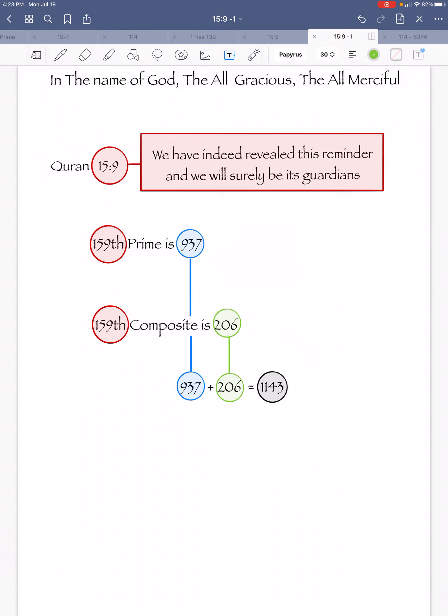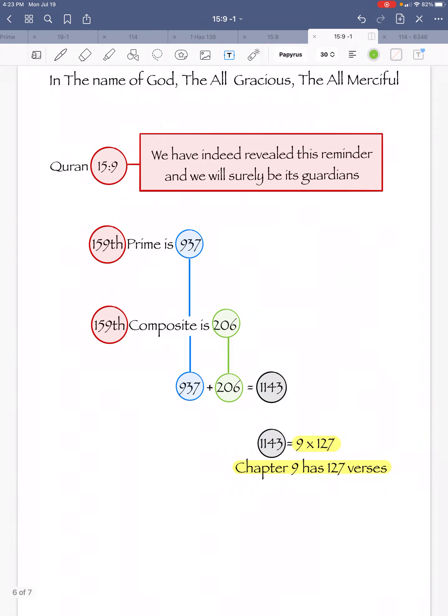And 1143 is equal to 9 times 127. And as we know, that statement is telling us that chapter 9 has 127 verses and not 129.